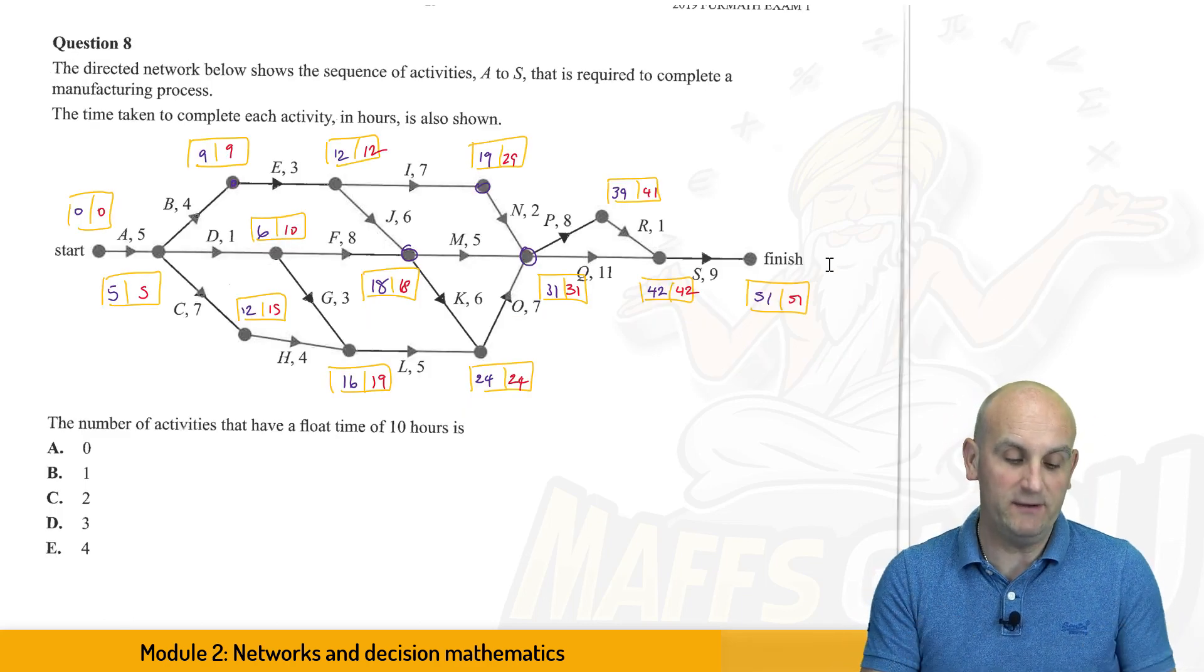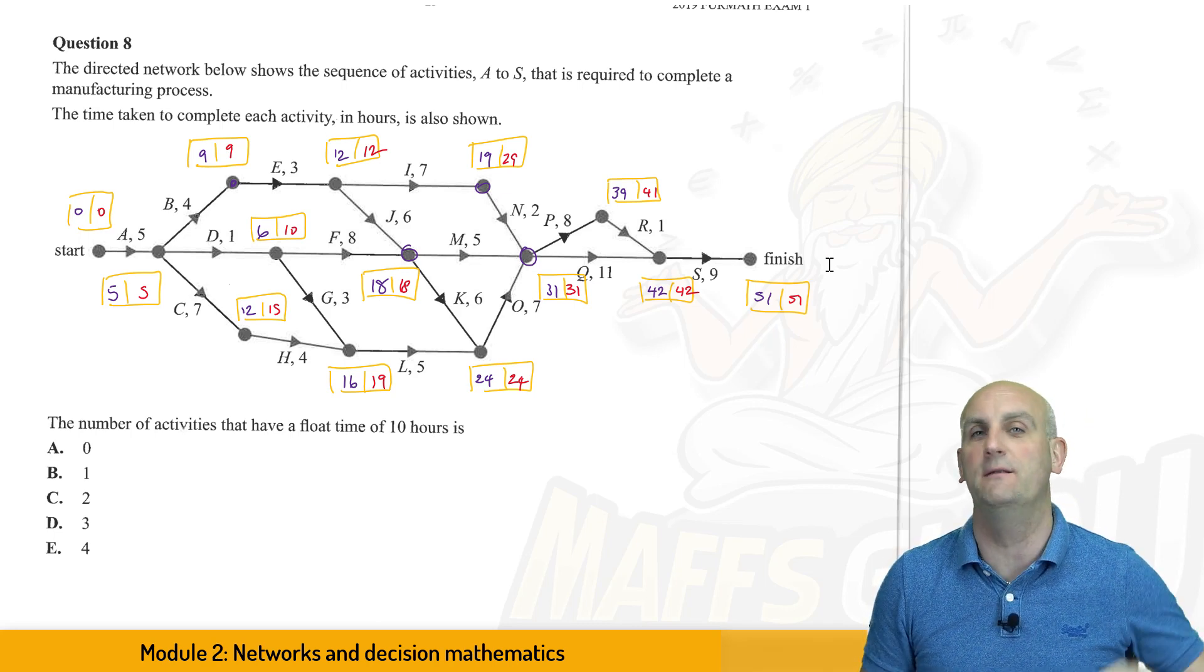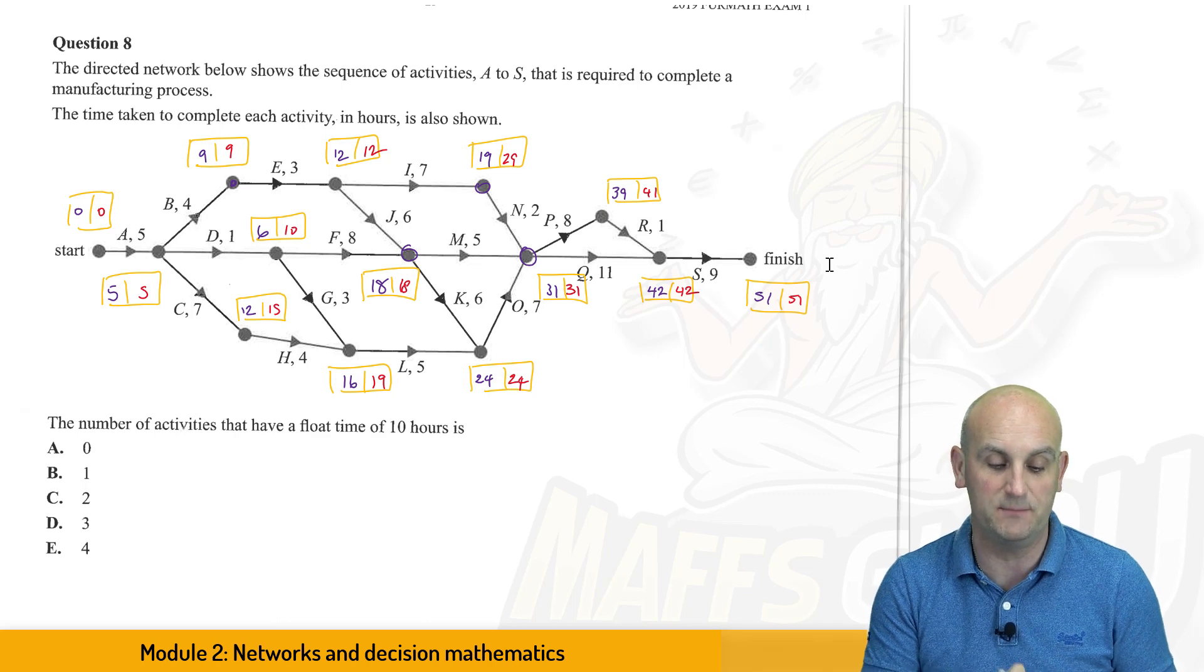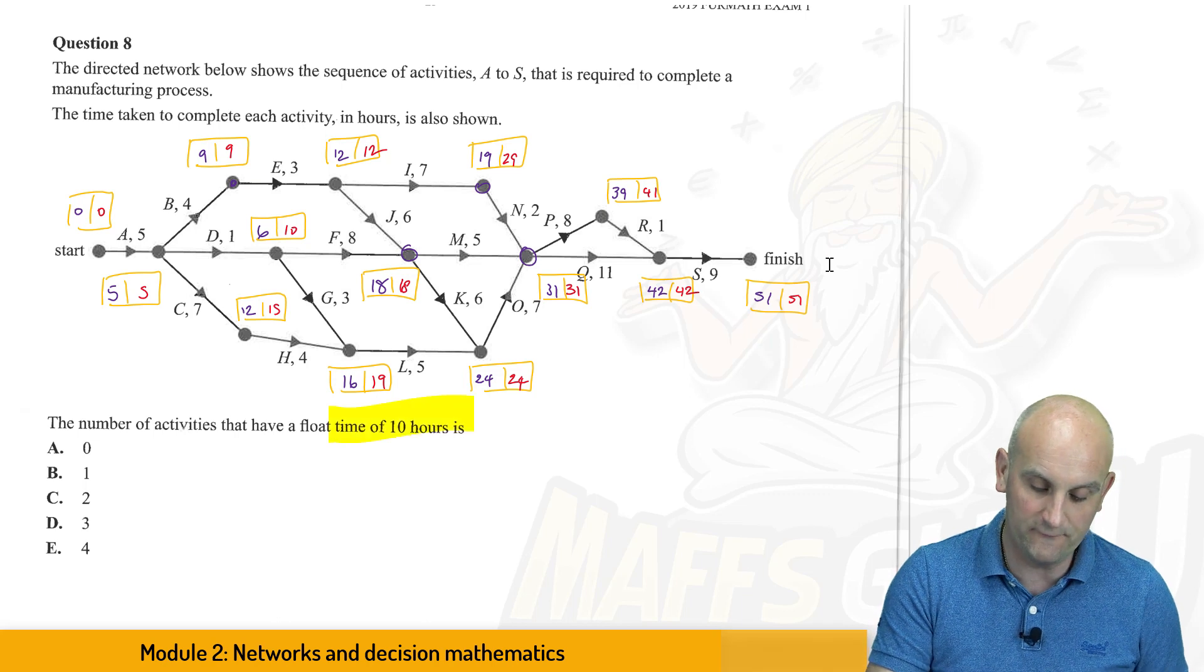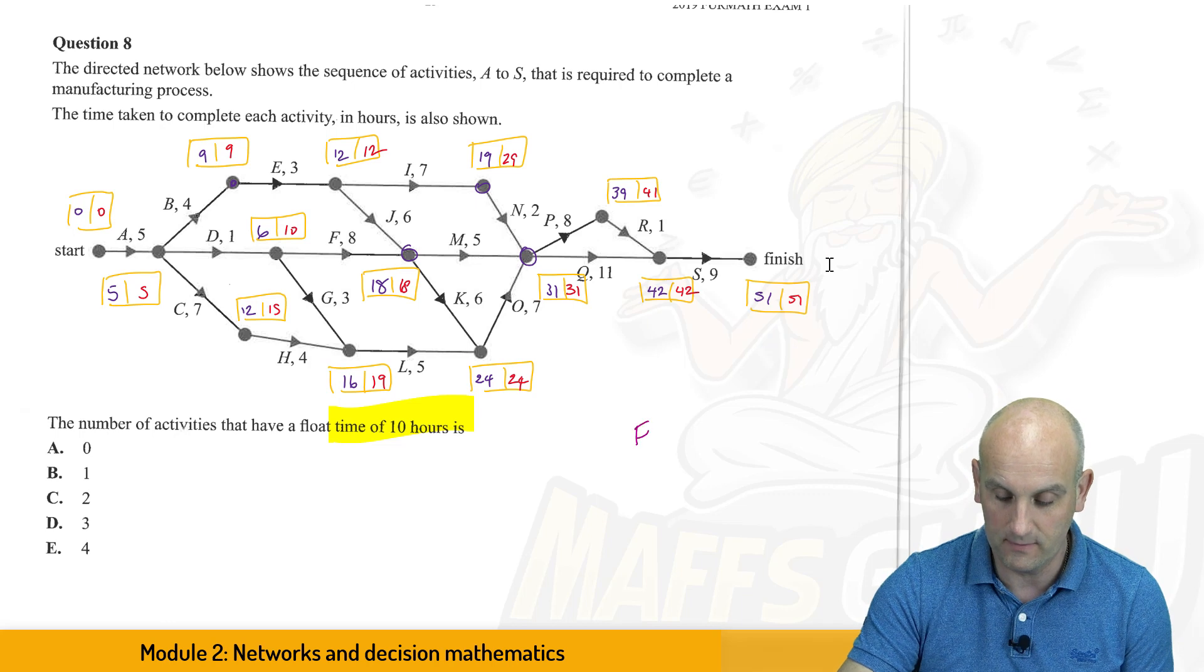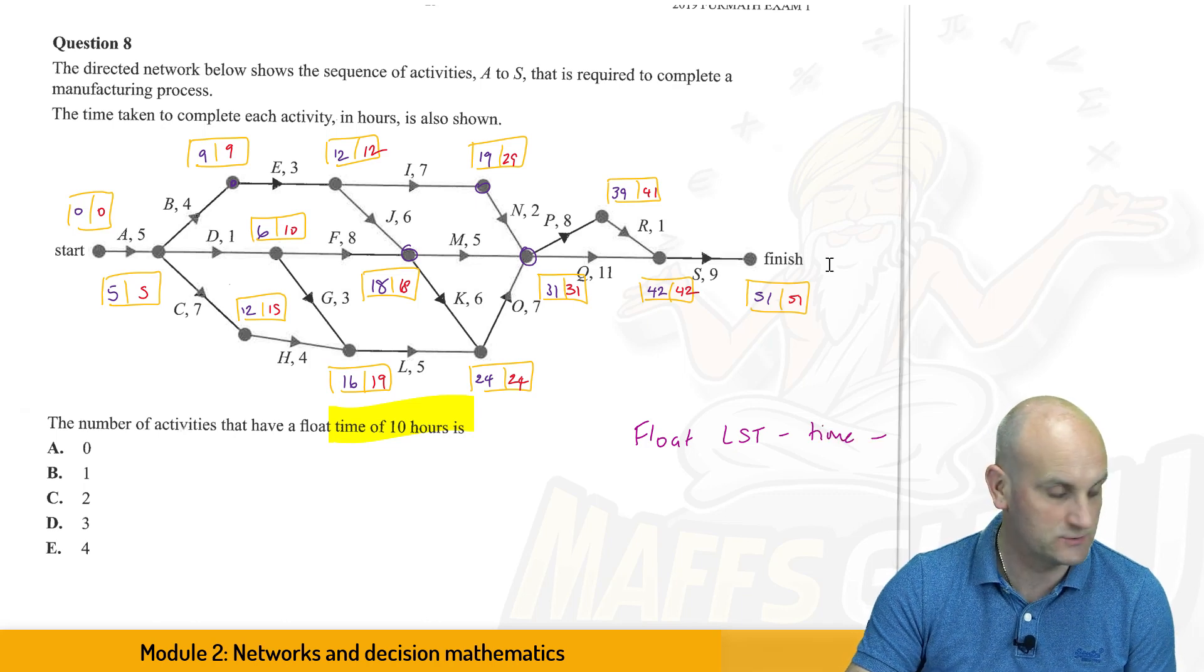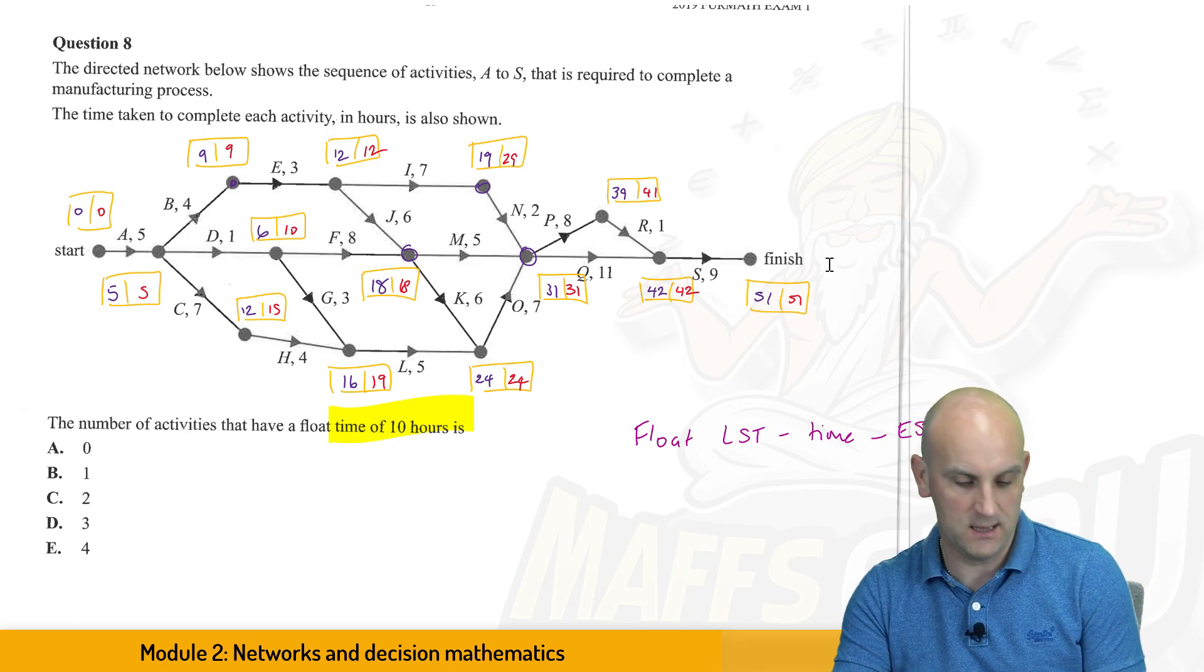In question number eight, we're given a directed network showing a sequence of activities A to S. Now, as you can see, I've already filled in my earliest and latest start times, and it says A to S is required to complete a manufacturing process. The time taken to complete each activity in hours is shown, and I filled it in. And it says the number of activities that have a float time of 10 is. Now, what we've got to remember is our float time is given by the latest starting time minus the time it takes for the activity, and subtract from that the earliest starting time of the activity.